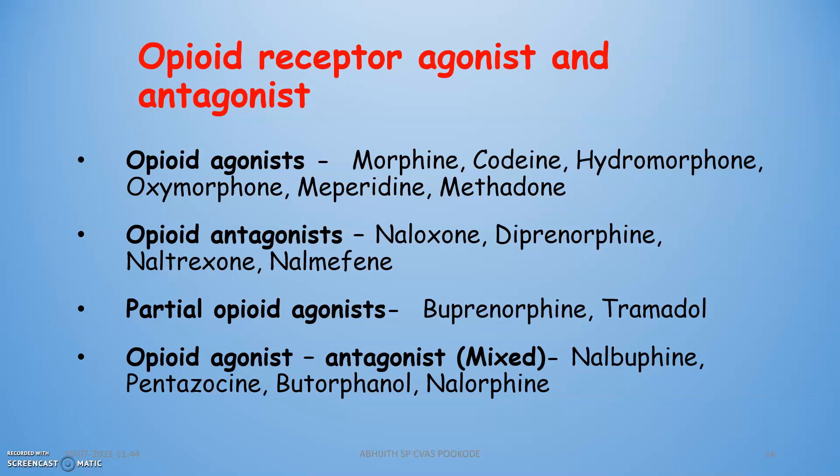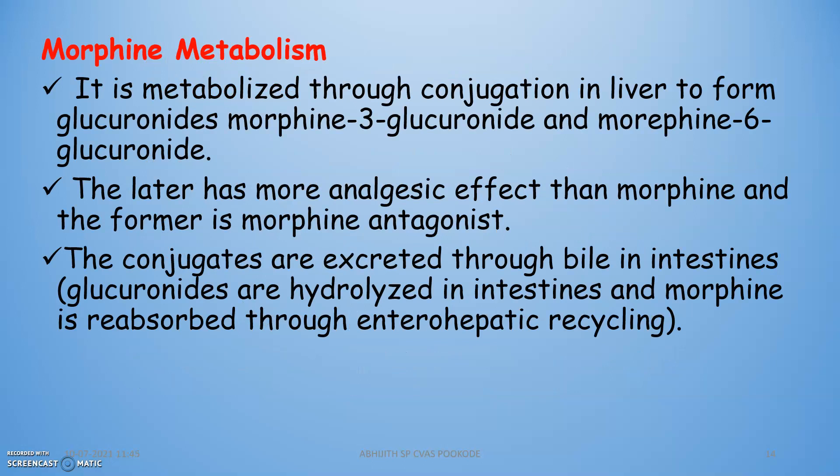Opioid agonists include morphine, codeine, hydromorphone, oxymorphone, meperidine, and methadone. Opioid antagonists include naloxone, diprenorphine, naltrexone, and nalorphine. Naltrexone is commonly used for alcohol toxicity, and naloxone is used as an antagonist in morphine toxicity. Partial opioid agonists are buprenorphine and tramadol — tramadol is used as a painkiller. Opioid agonist-antagonists with mixed activity include nalbuphine, nalorphine, butorphanol, and pentazocine.